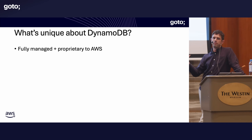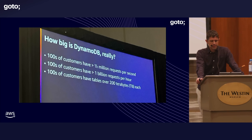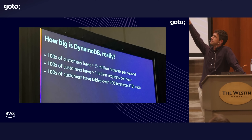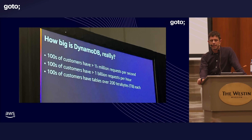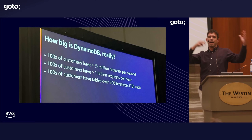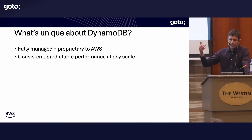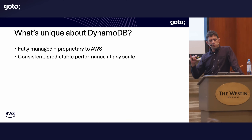Dynamo is proprietary to AWS, but because of that, you get some really nice fully managed capabilities. DynamoDB's main claim is consistent, predictable performance at any scale. At re:Invent last year, one of the senior principals on the DynamoDB team put up a slide about higher-scale clients: hundreds of customers doing half a million requests per second, hundreds doing a billion requests per hour, and hundreds with tables over 200 terabytes each. These are disjoint customers — some with huge tables, some with high peaks, some with sustained load. So Dynamo is serving some of the biggest workloads on the planet, aiming for that consistent, predictable performance at any scale.